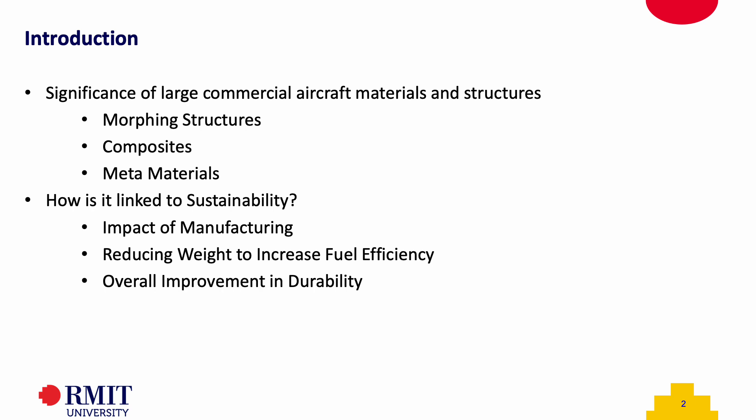Some of the structures that can be improved include morphing structures, composites, and the integration of metamaterials. The sustainability of large commercial aircraft is a multifaceted issue encompassing various aspects such as reducing the environmental footprint, enhancing operational efficiency, and extending the lifespan of an aircraft. This sustainability imperative has led to a re-evaluation of the materials and structures employed in aircraft design and construction.